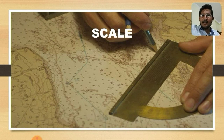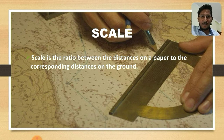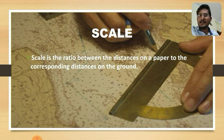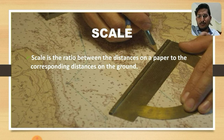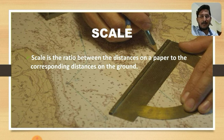What do you mean by scale? Scale is the ratio between the distance on a paper to the corresponding distance on the ground. If you are going to draw a map of a city, you cannot represent the actual distance on paper. For example, you may take 10 kilometers of the city as 1 centimeter on the map, so that you have the correct proportion of the city on your map.